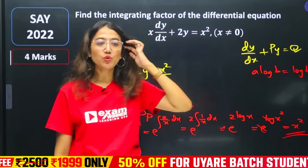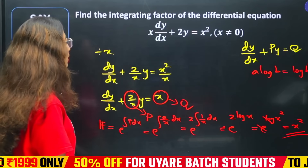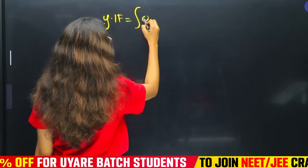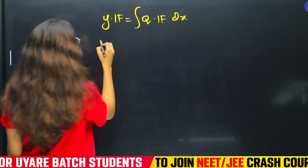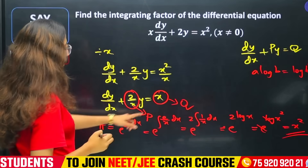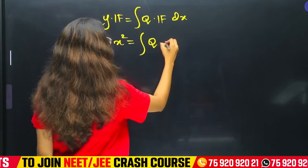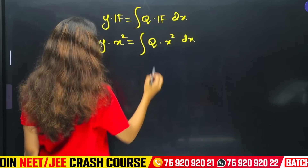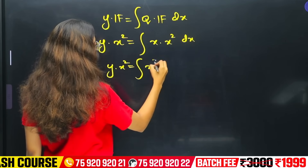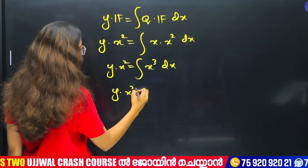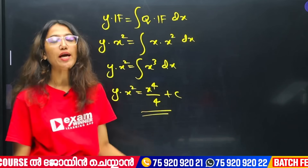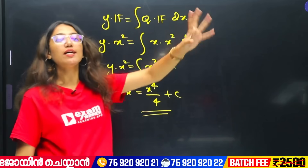The integrating factor is x². Applying the solution formula: y × x² = ∫Q × x² dx = ∫x · x² dx = ∫x³ dx = x⁴/4 + c. So y · x² = x⁴/4 + c. This is the solution.